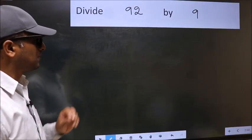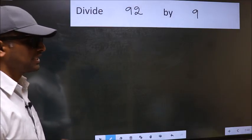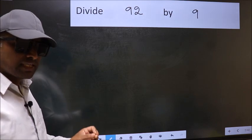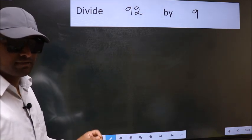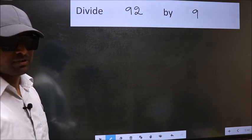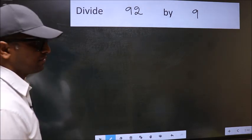Divide 92 by 9. While doing this division, many do this mistake. What is the mistake that they do? I will let you know. But before that, we should frame it in this way.